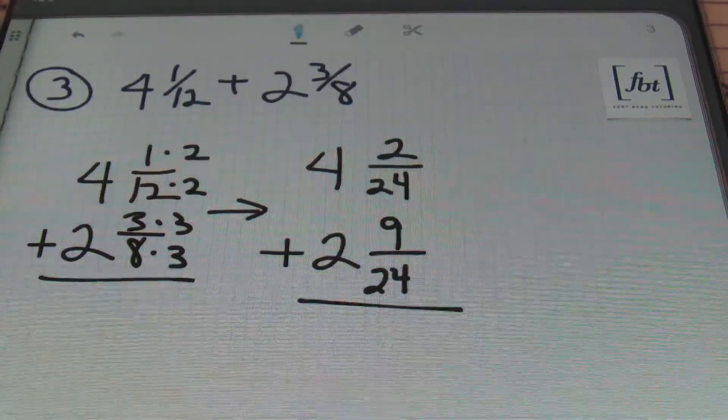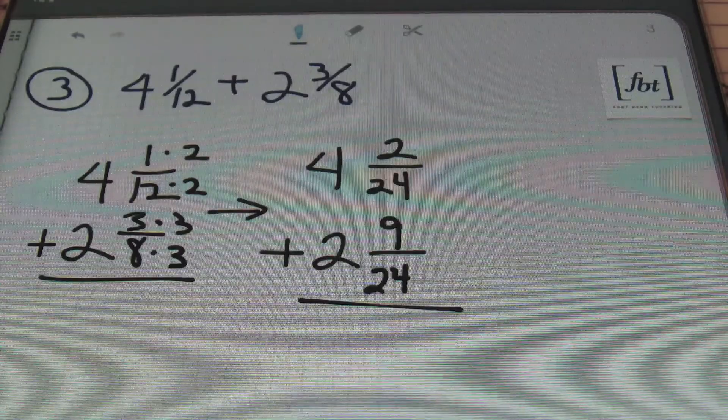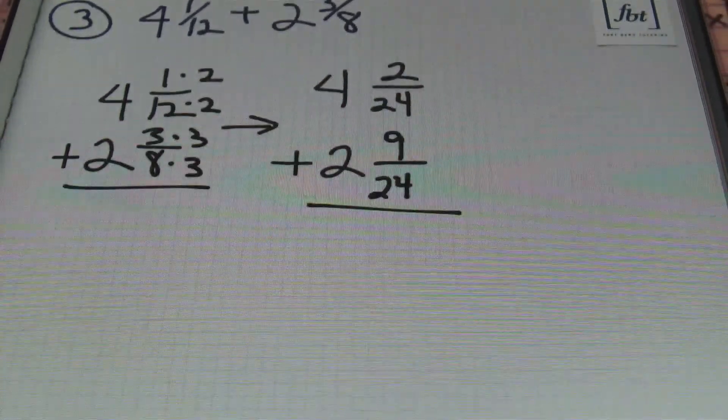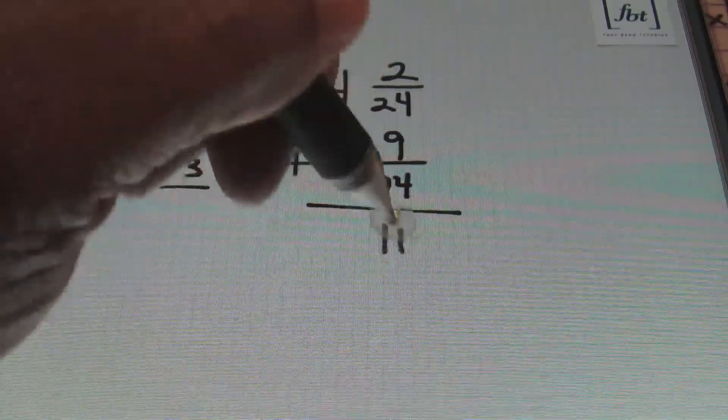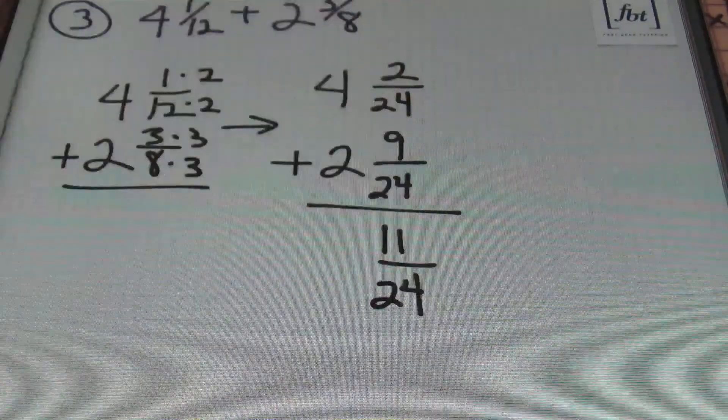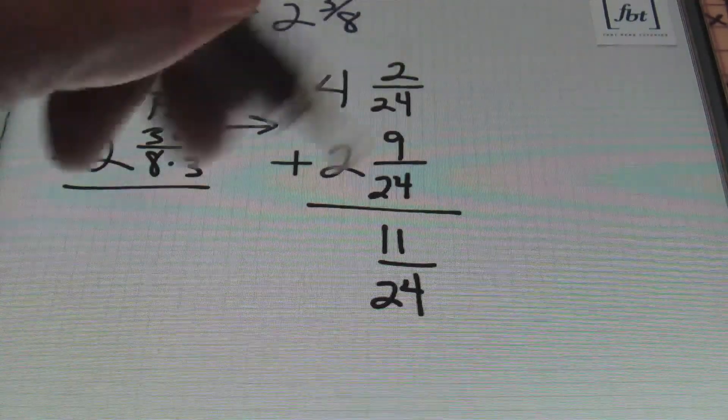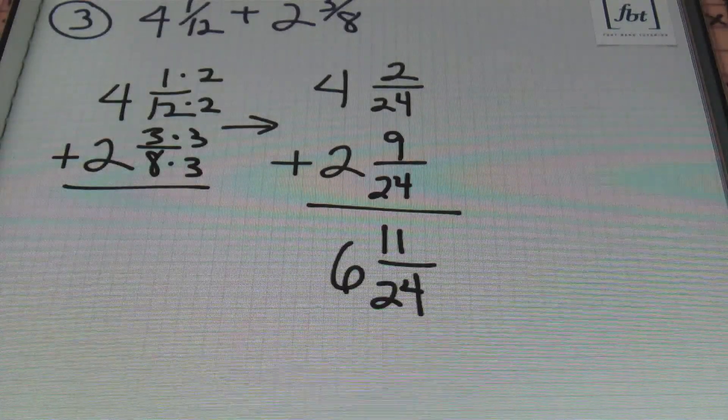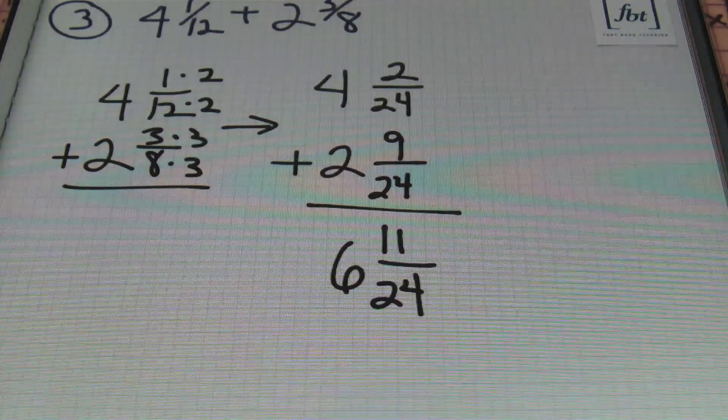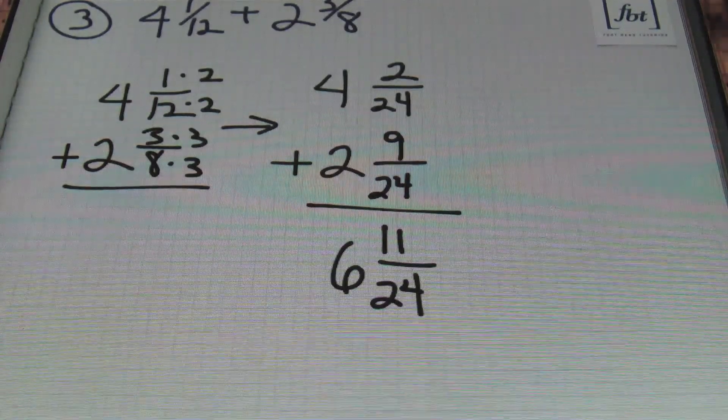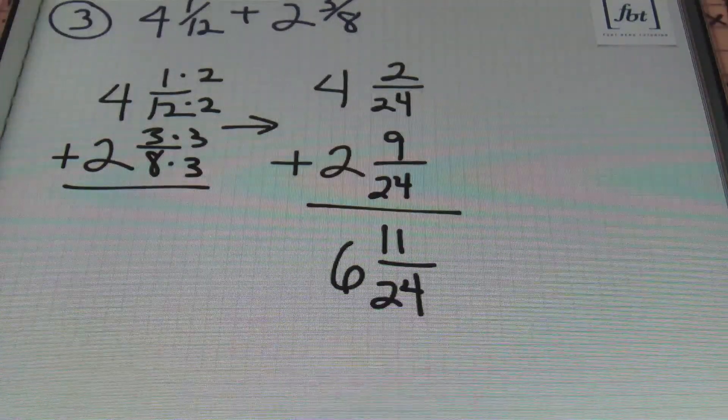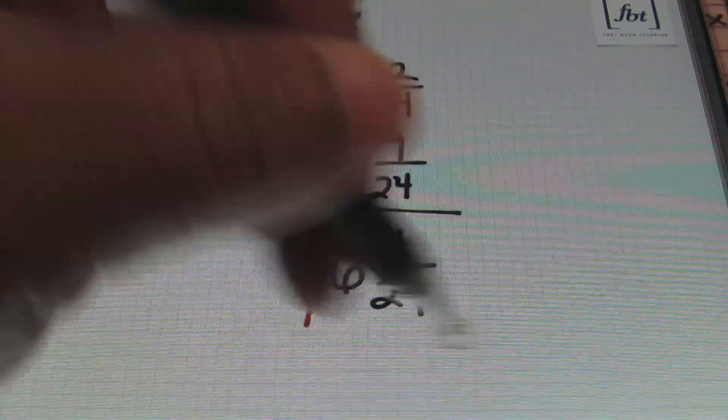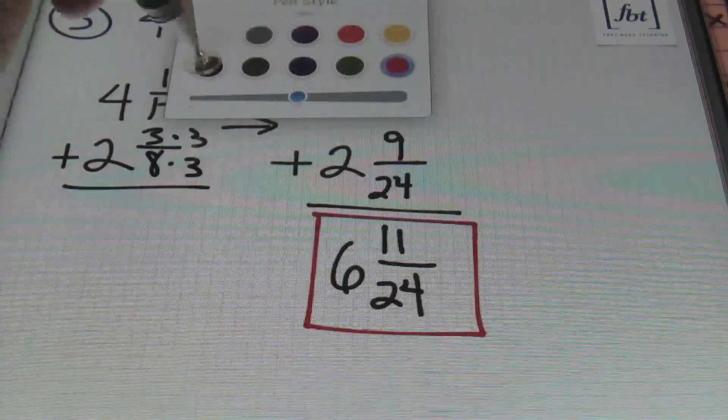So now that I have my equivalent fractions which contain common denominators I can go ahead and add the numerators finally. So 2 plus 9 gives me 11 over my denominator of 24 and I'm going to add 4 plus 2 together to give me 6. I'm going to look to see if I can simplify this any further and I can't. And I also want to make sure that my fraction is a proper fraction and it is. So that means that this is my answer ladies and gentlemen. That's it. Done and done. That was problem number 3.